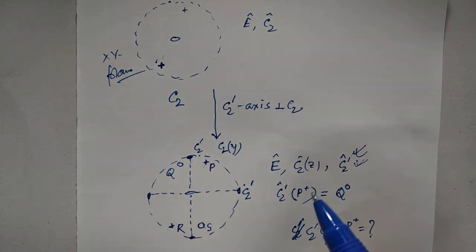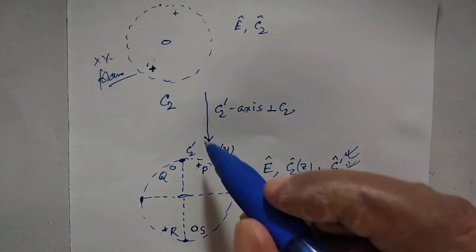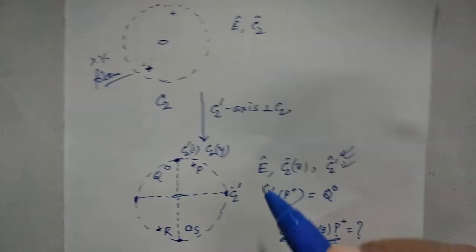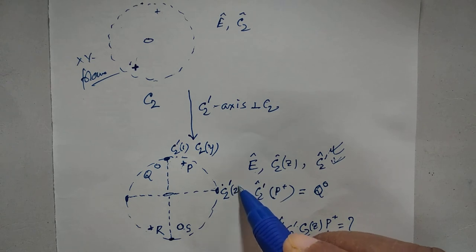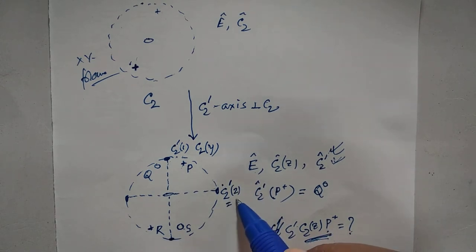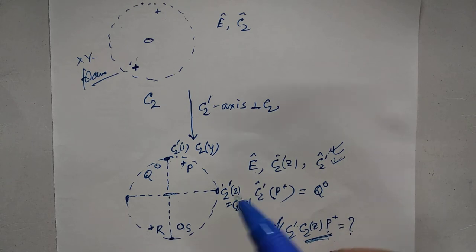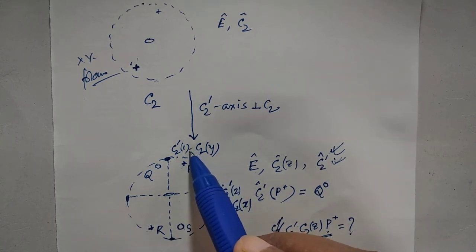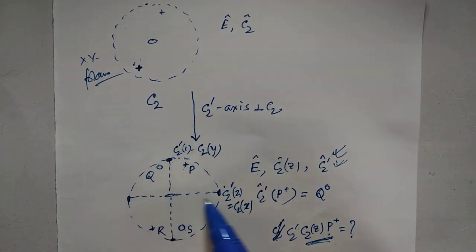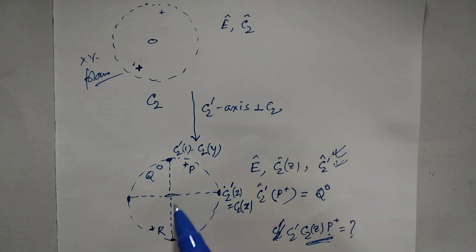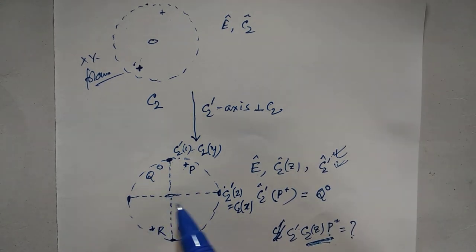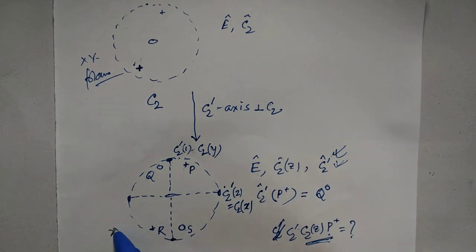If this first axis is called C2-prime-one, then a second axis C2-prime-two is generated. In fact, if C2-prime-one is the y-axis, then C2-prime-two is the x-axis — so we have C2y and C2x. The z-axis is perpendicular to this xy plane.